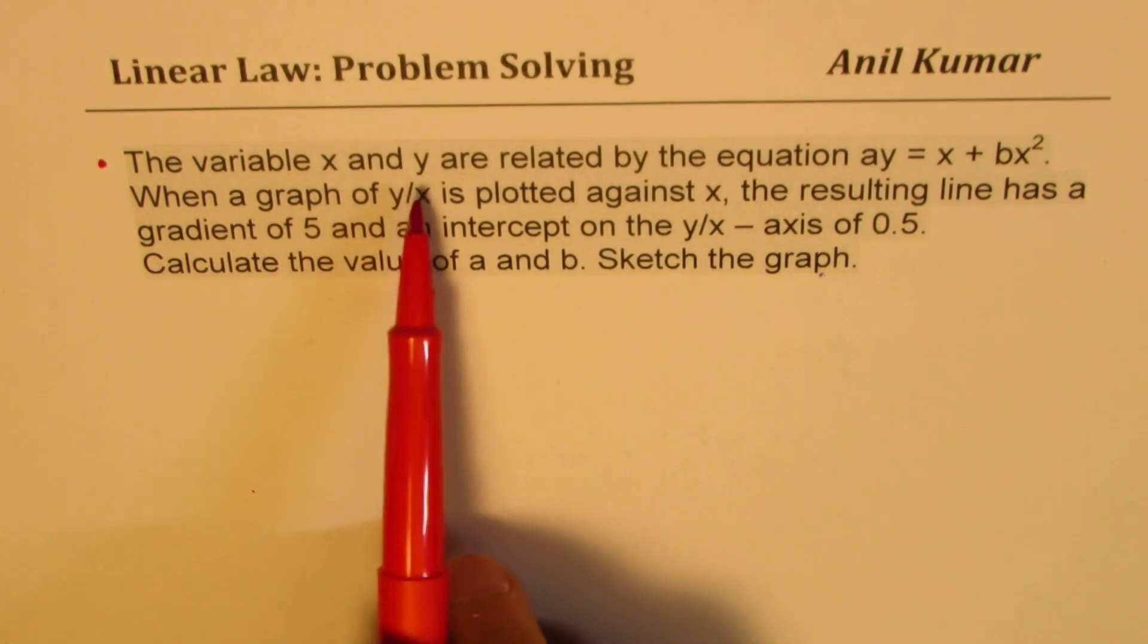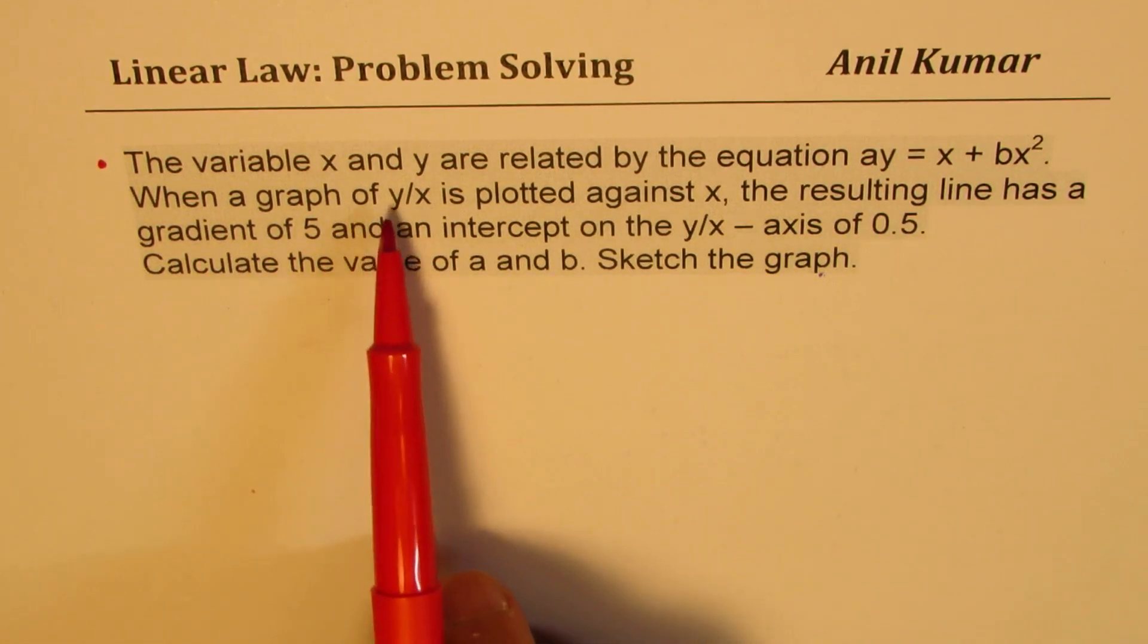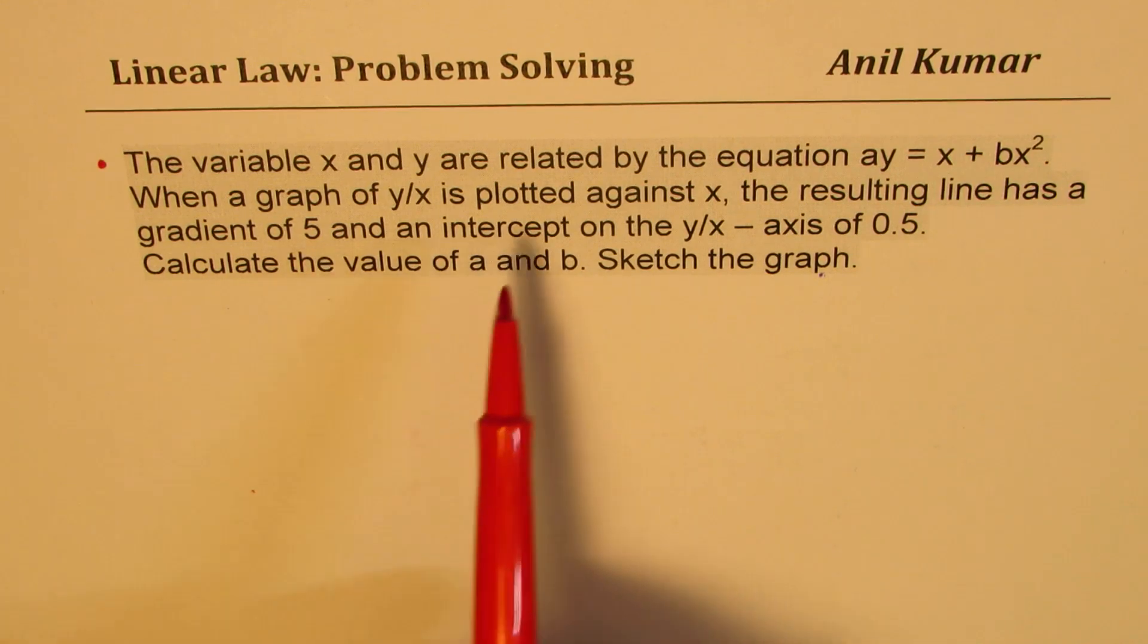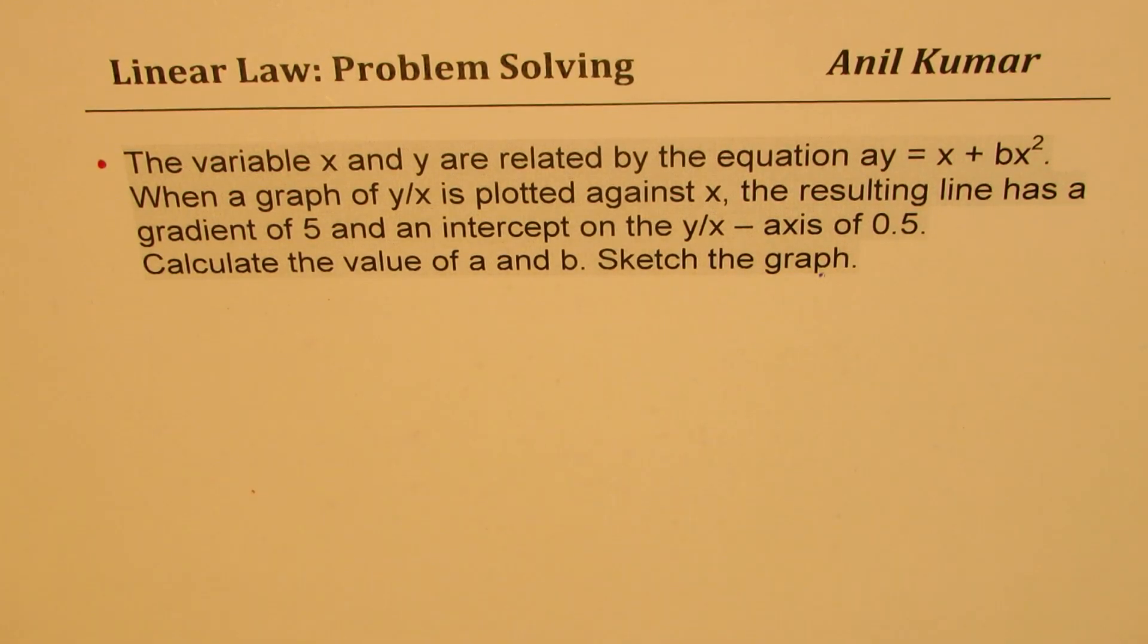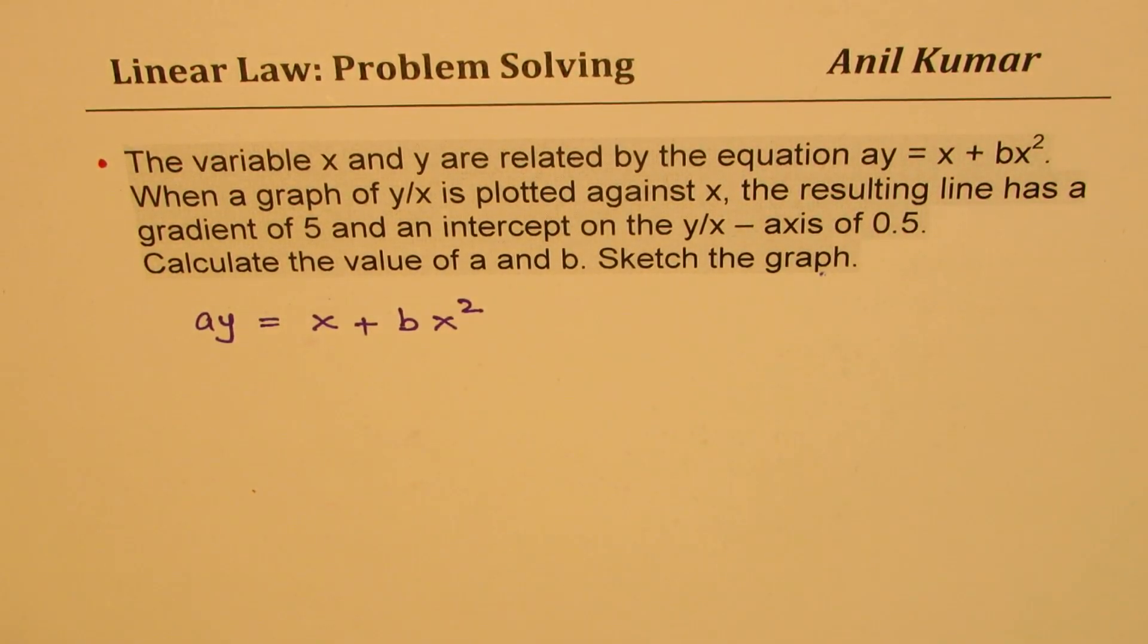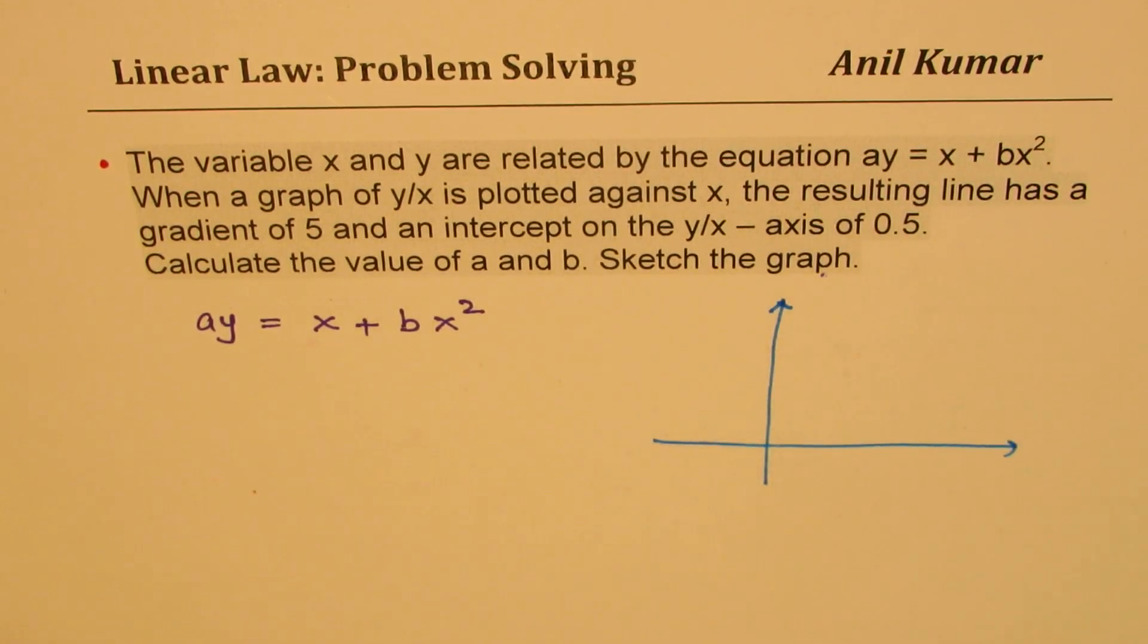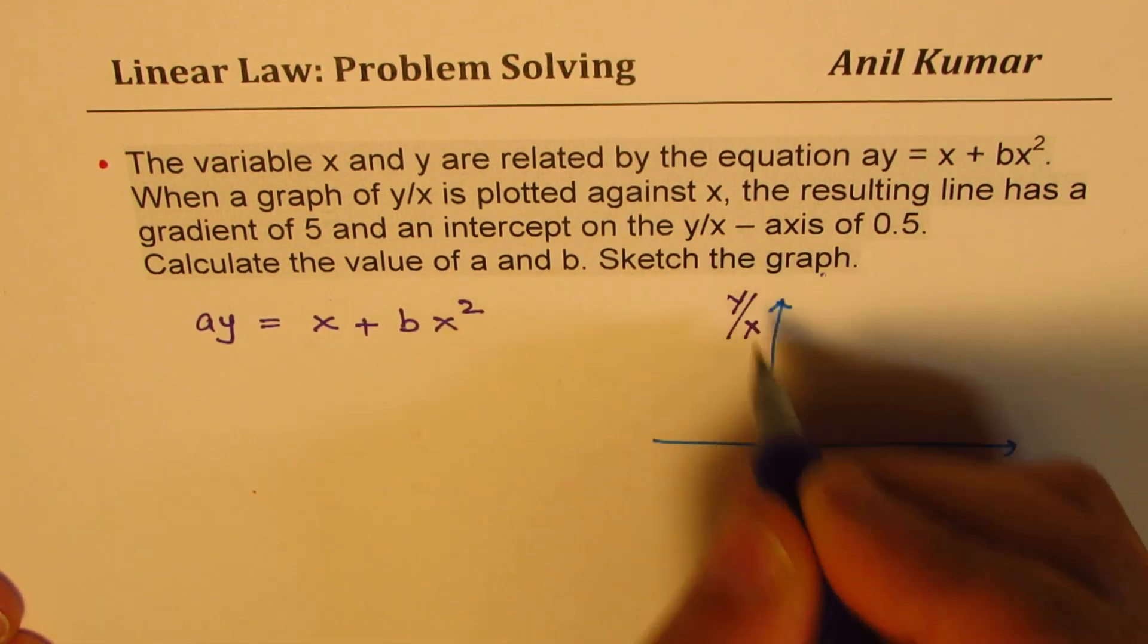The question here is, the variable x and y are related by the equation ay equals to x plus bx squared. The graph of y over x is plotted against x. The resulting line has a gradient of 5 and an intercept on the y over x axis of 0.5. Calculate the value of a and b. So, we have y over x here is plotted against x.